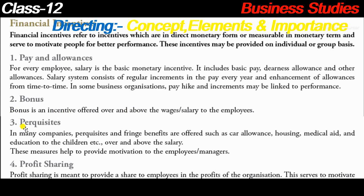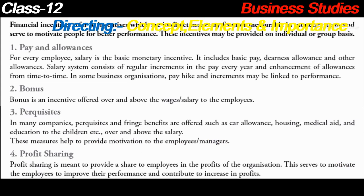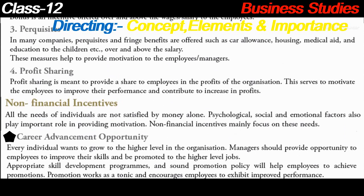The third financial incentive is perquisites. In many companies, perquisites and fringe benefits are offered such as car allowance, housing, medical aid, and education for children - over and above the salary. This means getting a house, a car, household facilities, medical treatment, and the company may cover your children's school education. This is called perquisites, and it helps provide motivation to employees.